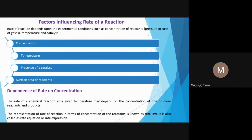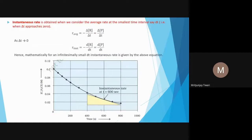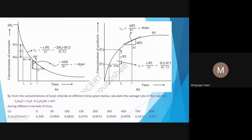Now let us look at the factors influencing the rate of reaction. Even from the concentration versus time graph, we can see the slope is continuously changing, which means the instantaneous rate is changing. As the concentration of reactants decreases with time, the rate of reaction also decreases.